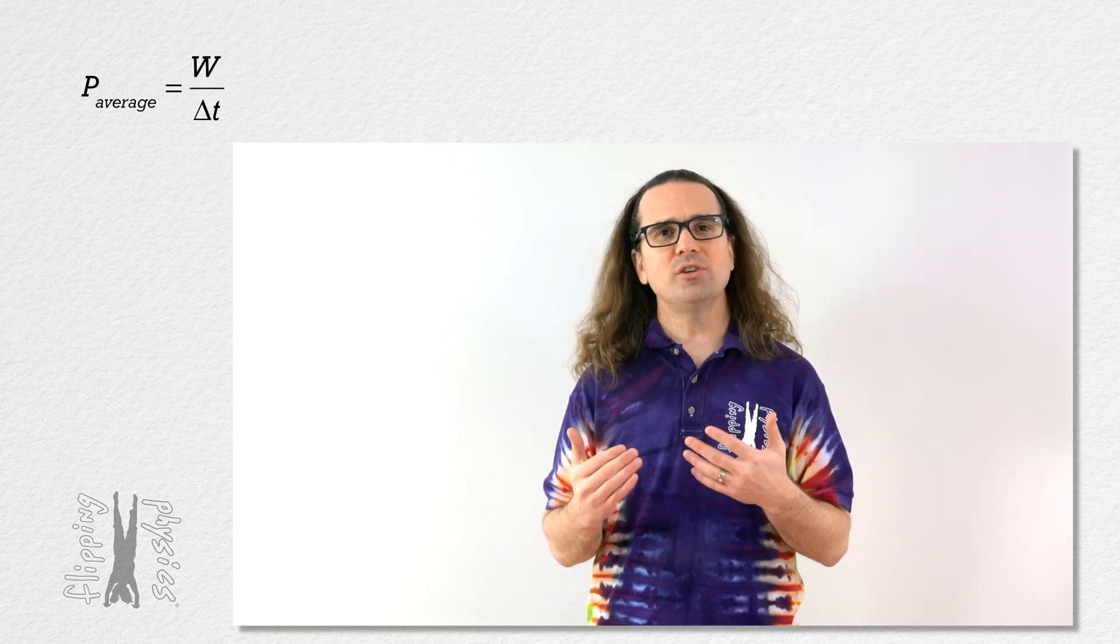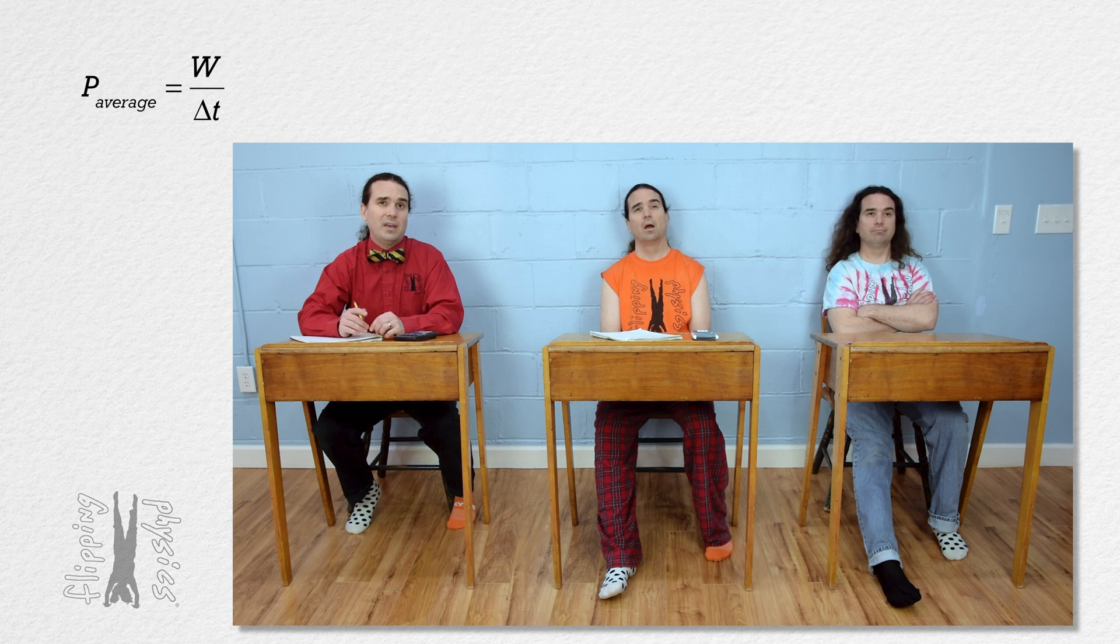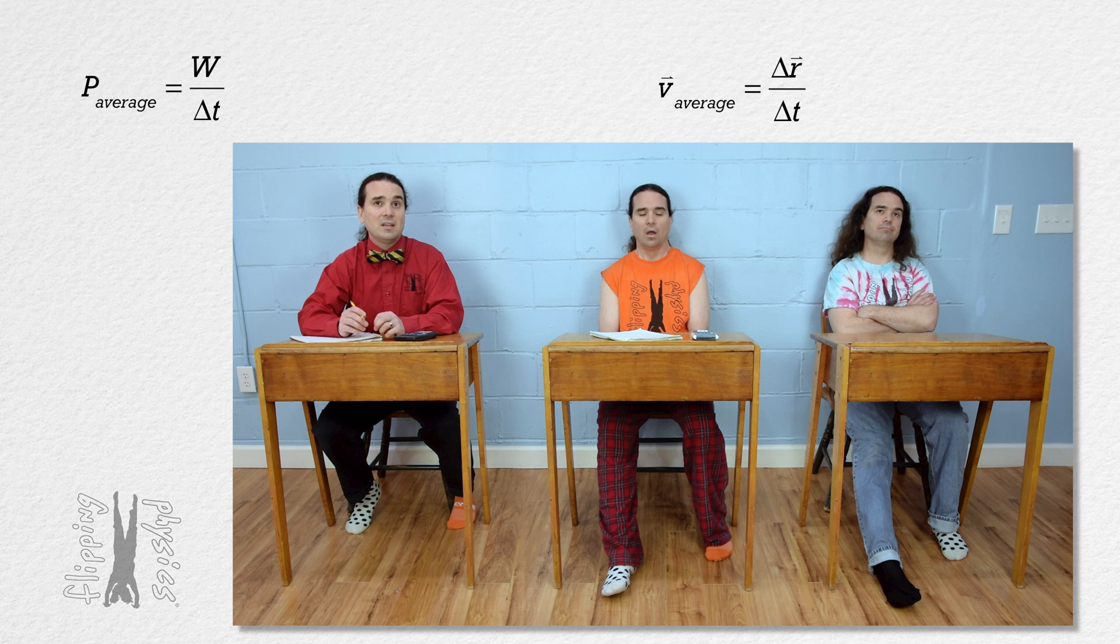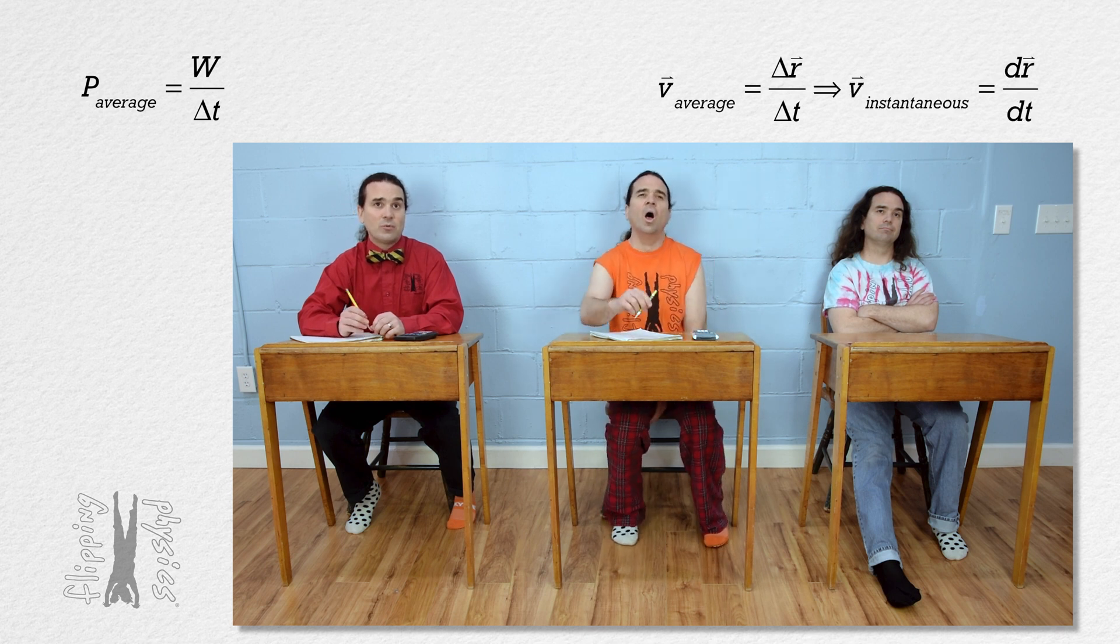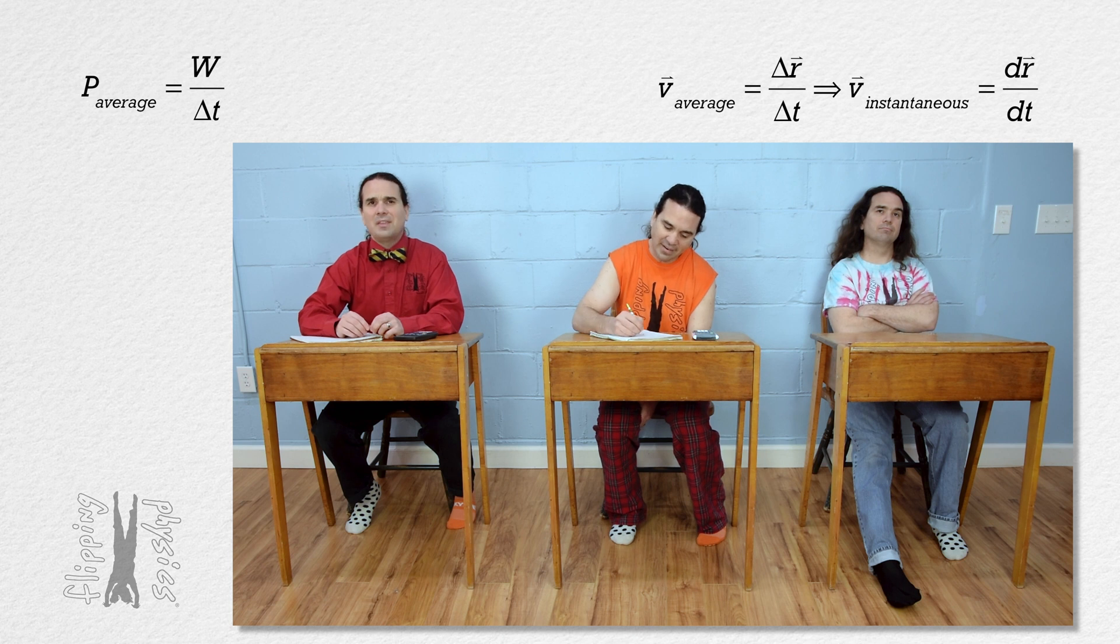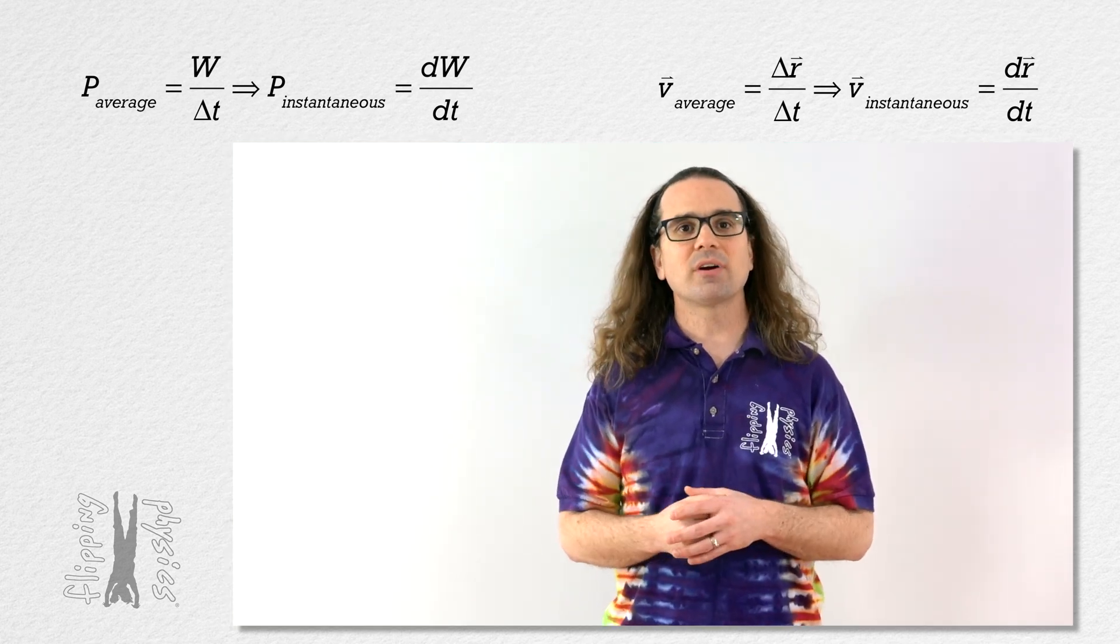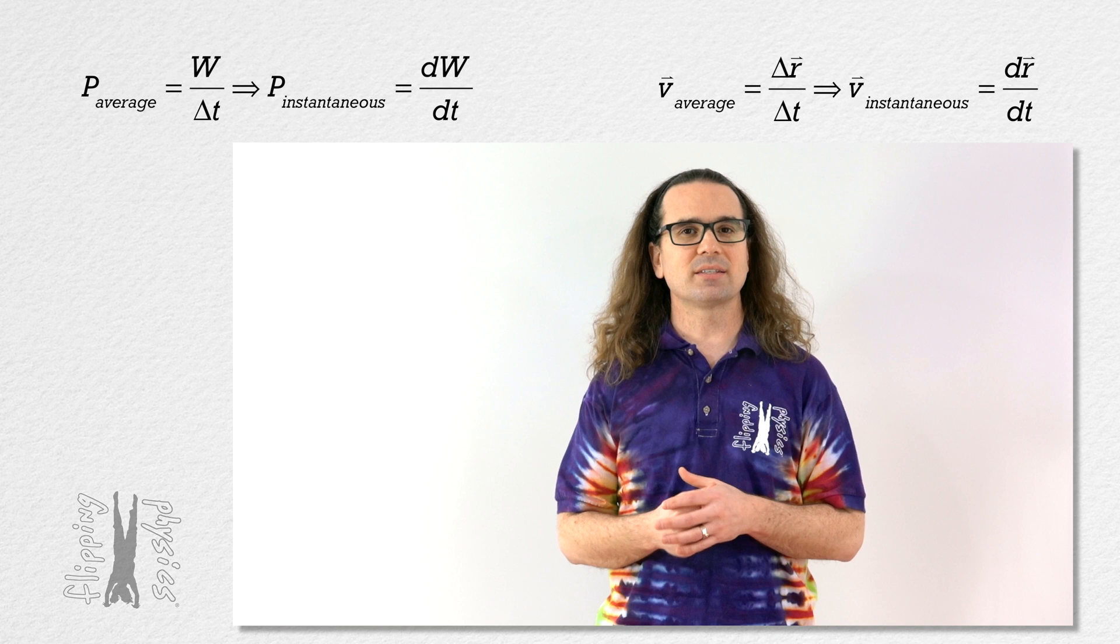Billy, what do you think the equation for instantaneous power is? Well, average velocity equals change in position over change in time, and instantaneous velocity equals the derivative of position with respect to time. So I think instantaneous power equals the derivative of work with respect to time. Right, Mr. P? Absolutely, Billy. Instantaneous power equals the derivative of work with respect to time.